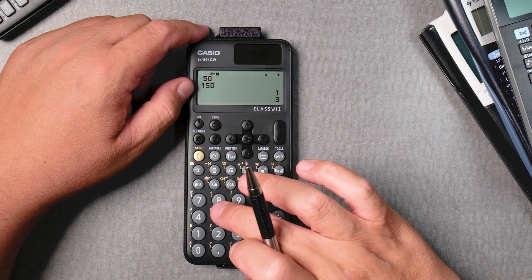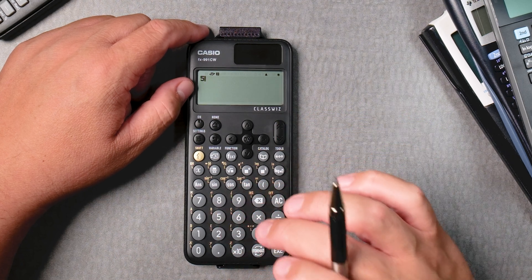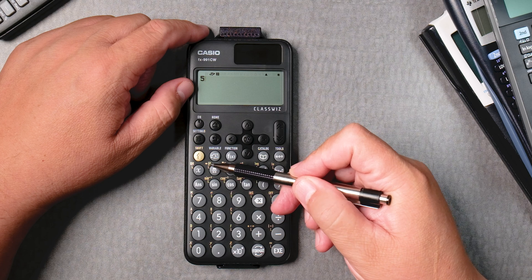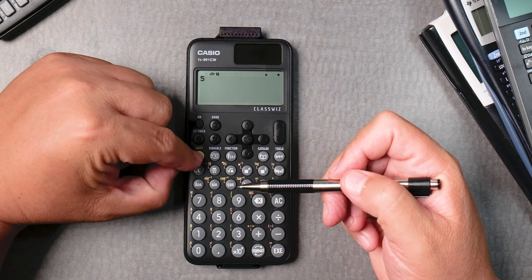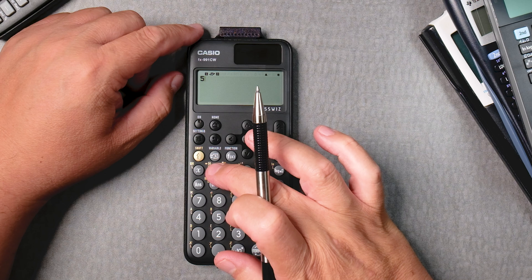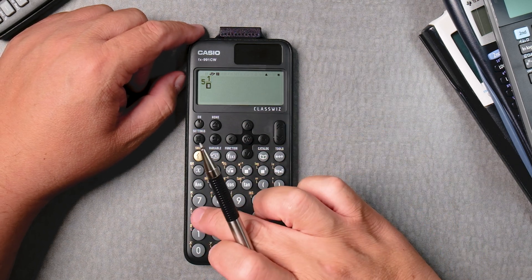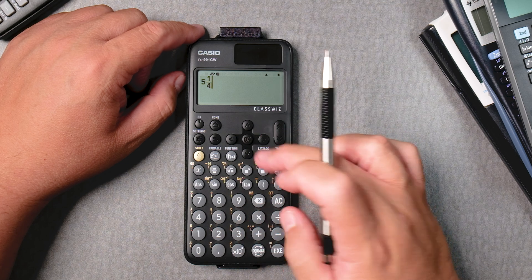Let's say you have a mixed number like five and a fourth. We'll use the fraction button but the gold area, so shift and then fraction button, and then one, bring down, four, and then move over.